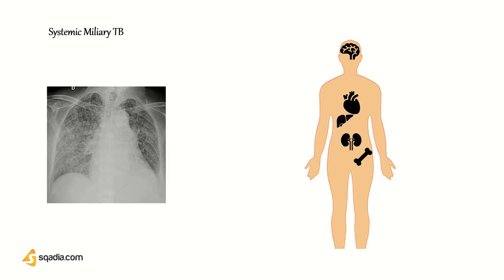We will now discuss miliary TB, also called systemic TB, because it results from the hematogenous spread of tuberculomas. When tuberculosis spreads in the blood, it can damage various organs. In the lungs it produces a millet seed appearance visible on radiograph. Tuberculosis can produce lymphadenopathy in the cervical, inguinal, or axillary regions. Matted, rubbery, enlarged lymph nodes in the neck are called scrofula.